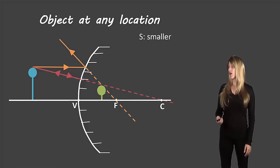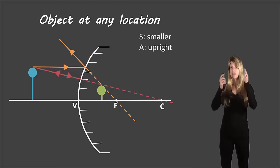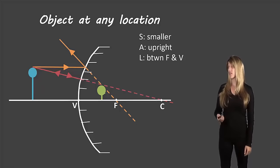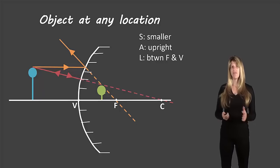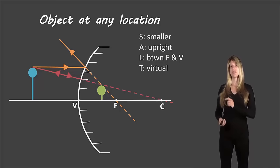Now if we're describing our object it's smaller than the original, it's upright because they're facing the same direction, it's located between F and V and it's a virtual image because it's on the opposite side of the mirror from the original object.